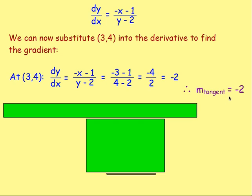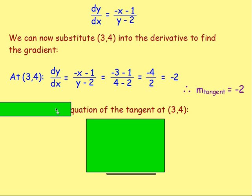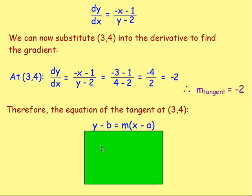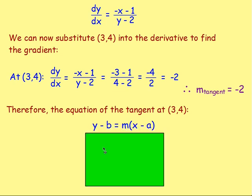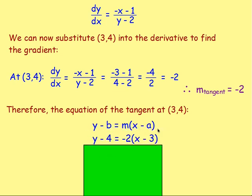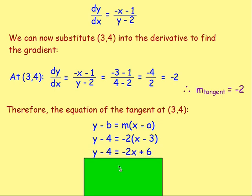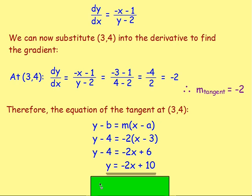From there, we've got the gradient of the tangent and we know it's going through the point 3, 4. Y minus B equals M bracket X minus A. Sub in the values: Y take away 4 equals negative 2 bracket X take away 3. Multiply out the brackets on the right, then add 4 to both sides, and you will get an answer of Y equals negative 2X plus 10.